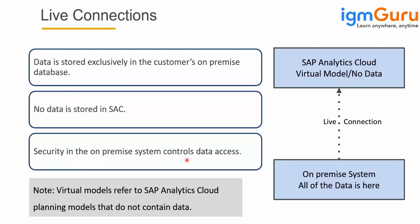Imagine your database system has certain securities where certain users need read access, certain users need write access, or certain users need access to sales data while others need access to marketing data. All those security restrictions and authentication mechanisms will still apply when you are using live connections, which means you don't need to create specific security restrictions in SAC. By default, the on-premise or data source security will be reused in live connections.